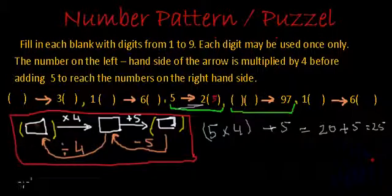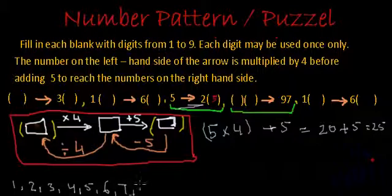5 times 4 is 20, and then we have plus 5. So 20 plus 5 will give us 25. They have already given us 2, so here we can peacefully write 5 inside the bracket. So this blank space is filled with 5. So before proceeding further, let me write the digits from 1 to 9 over here so that we don't do any mistake and we avoid repeating the digits. And 5 we have already used, so I am going to strike it off.